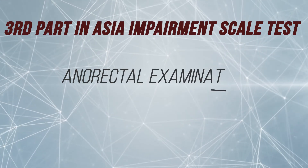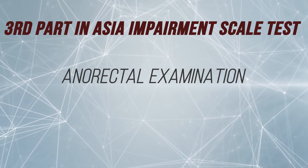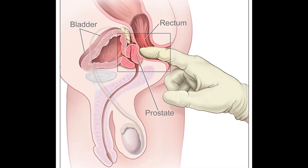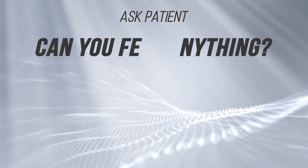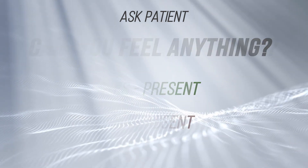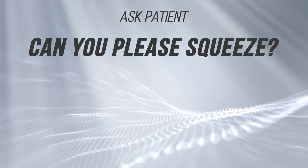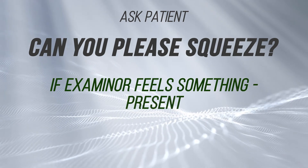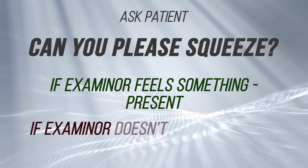The last part is the anorectal examination, which is vital in determining your ASIA impairment scale. You might have sensory or motor function below your level of injury, but you can only be considered an incomplete if you have sensory or motor function in this examination. For the sensory component, a gentle pressure is applied to the anorectal wall by the examiner's finger, and the patient is asked what they feel — perceived pressure is graded as absent or present. For the motor component, the patient is asked to voluntarily contract the external anal sphincter around the examiner's finger, and the contraction is scored as absent or present.